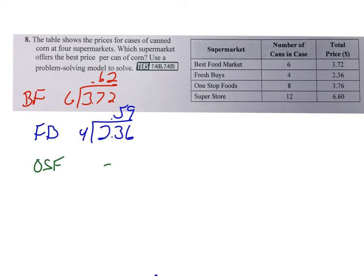Alright, be sure and label as you go. So best foods, I'm going to divide the two because it's a unit rate, and that's $3.72 divided by 6, and you get $0.62. Fresh buy is $2.36 divided by 4, and that comes out to $0.59. Next one, one-stop foods. That is $3.76 divided by 8, and that comes out to $0.47. The last one, you have Superstore, $6.60 divided by 12, comes out to $0.55.